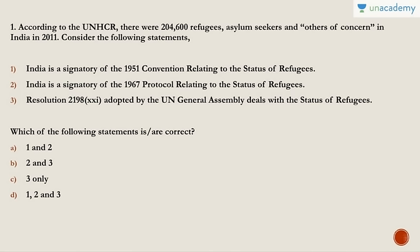Question one: According to UNHCR (United Nations High Commissioner for Refugees), there were two lakh refugees, asylum seekers and others of concern in India in 2011. Consider the following statements: India is a signatory of the 1951 Convention relating to the status of refugees; India is a signatory of the 1967 Protocol relating to the status of refugees; and Resolution 2198 adopted by the UN General Assembly deals with the status of refugees. The answer is only the third statement is correct, because India is neither a signatory of the 1951 Convention nor of the Protocol. So answer is C.